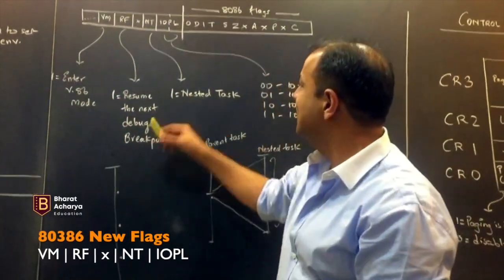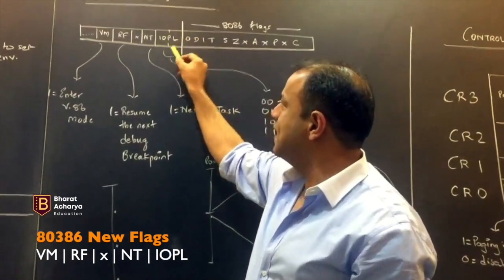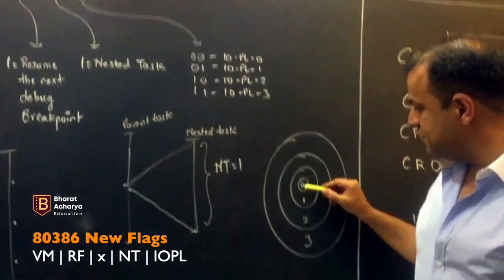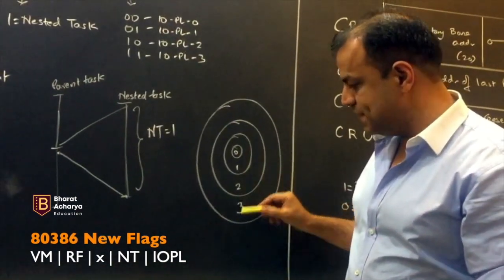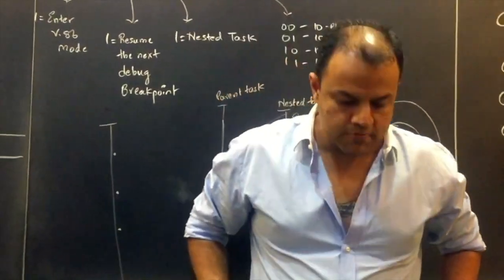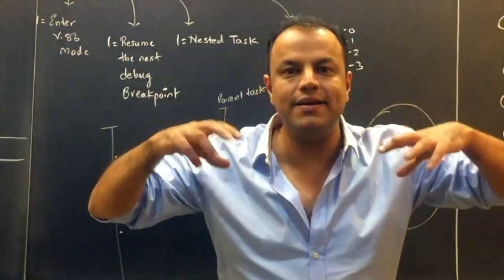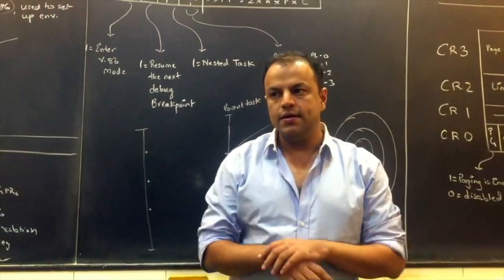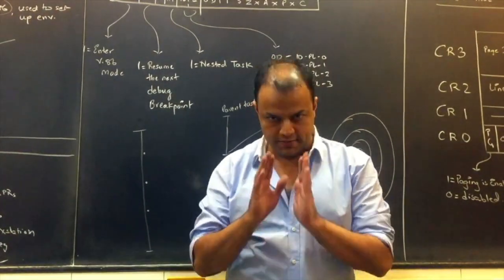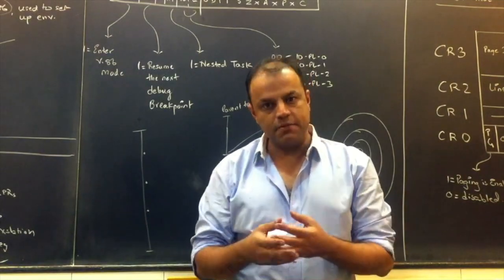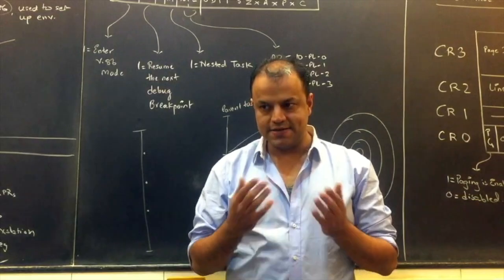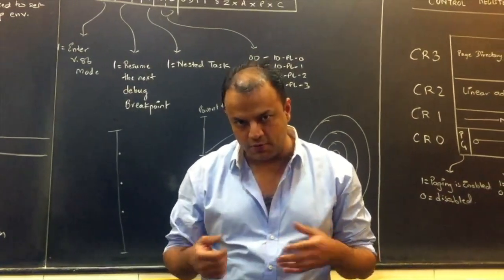The first flag is IOPL. Remember what I told you in the previous video — there are four privilege levels: PL0, PL1, PL2, PL3. You assign privilege levels to entities. An entity can be either a program or data stored in memory. In memory, everything is stored in a segment — segments are like files in the modern world.